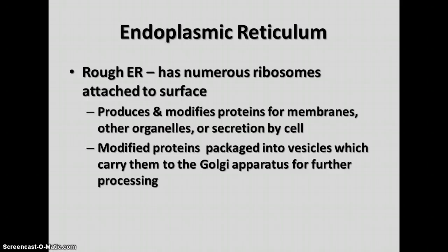The rough ER has ribosomes attached to its surface — that's why we call it rough; it kind of looks like sandpaper with sand on the surface. In the rough ER, a lot of protein is made. The proteins are modified into the correct shapes: subunits are put together, and secondary and tertiary structure forms. It makes proteins for other membranes, other organelles, and for secretion by the cell. These modified proteins are packaged into vesicles — little carrier membranes — which carry them to the Golgi apparatus for further processing.